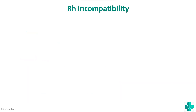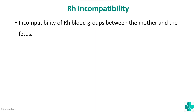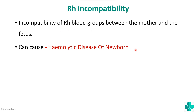What is Rh incompatibility? The incompatibility of Rh blood groups between mother and fetus is called Rh incompatibility — meaning if the mother is Rh negative and the fetus is Rh positive, they are incompatible. This is called Rh incompatibility, and it can cause what is known as hemolytic disease of the newborn.